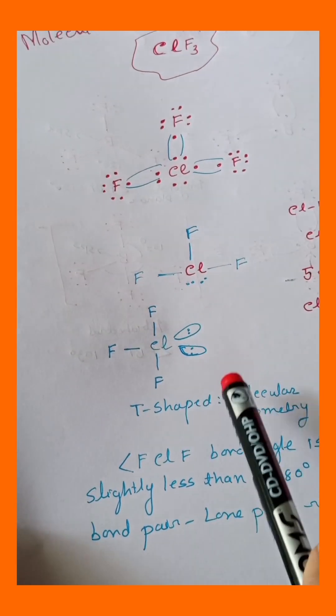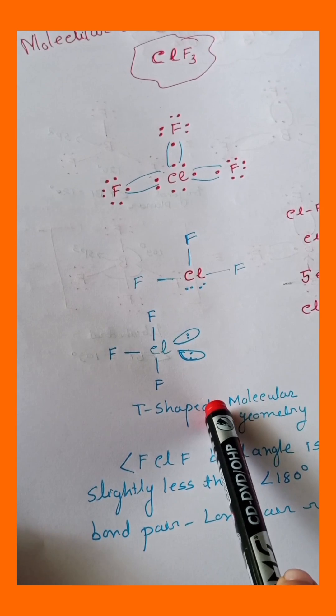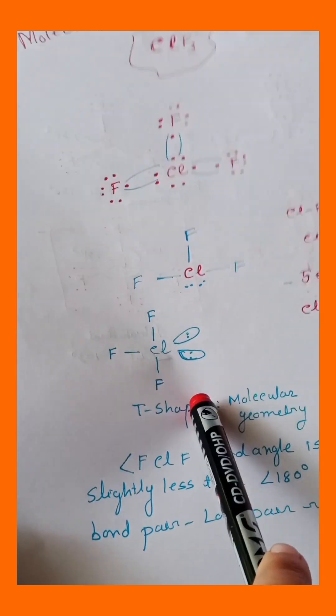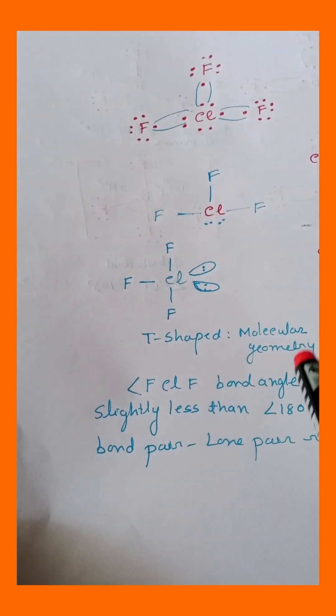But here chlorine contains 2 lone pairs. Now these 2 lone pairs occupy the equatorial position to reduce the lone pair-lone pair repulsion. So that's why the molecular geometry will be T-shaped.